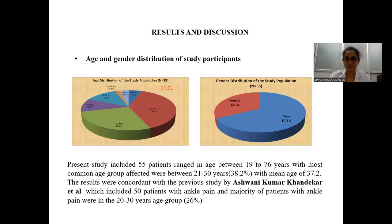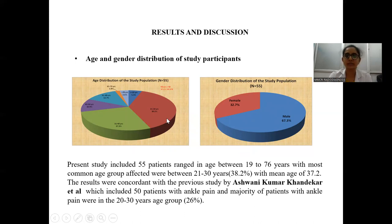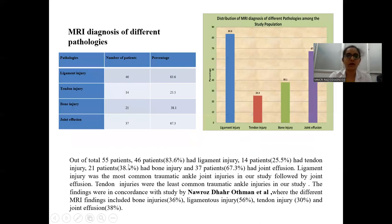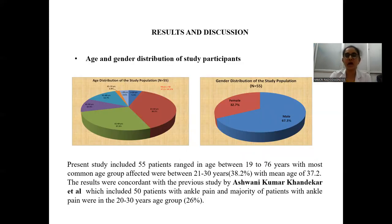Coming to results and discussion: the present study included 55 patients, mainly ranging between 19 to 76 years old, and most fell under the age group of 21 to 30 years — around 38% — with a mean age of 37.2 years. This result was concordant with a previous study which included 50 patients with ankle pain, where the majority were between 20 to 30 years of age. Regarding gender distribution, males were more commonly affected at around 67.3% and females at 32%.